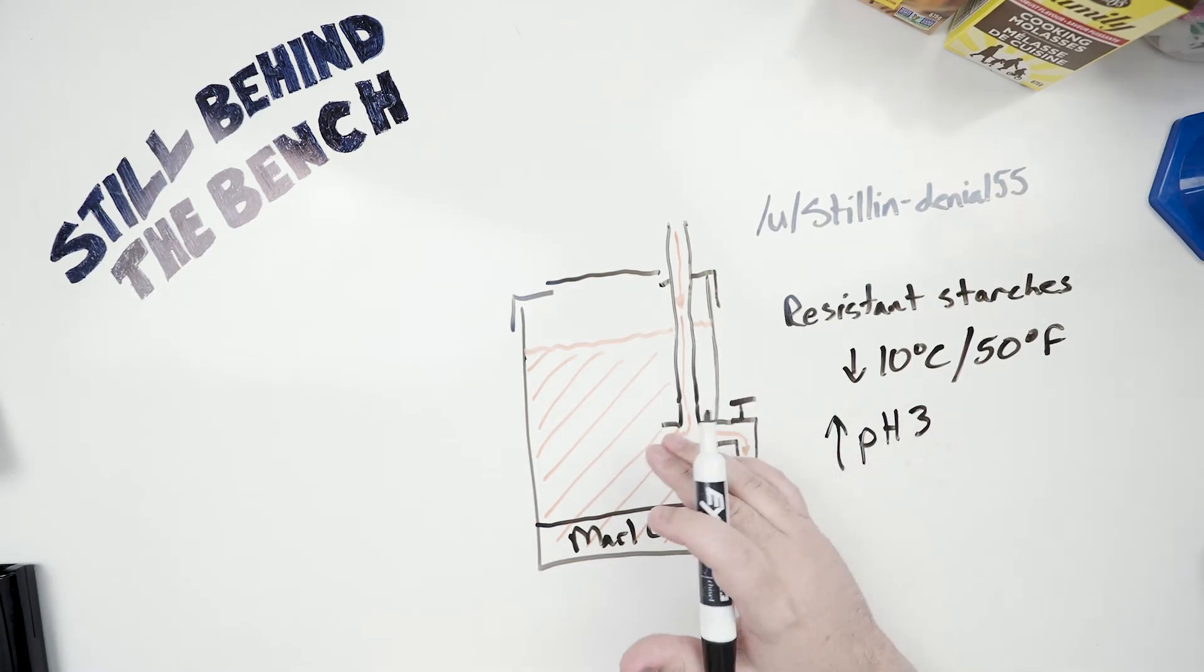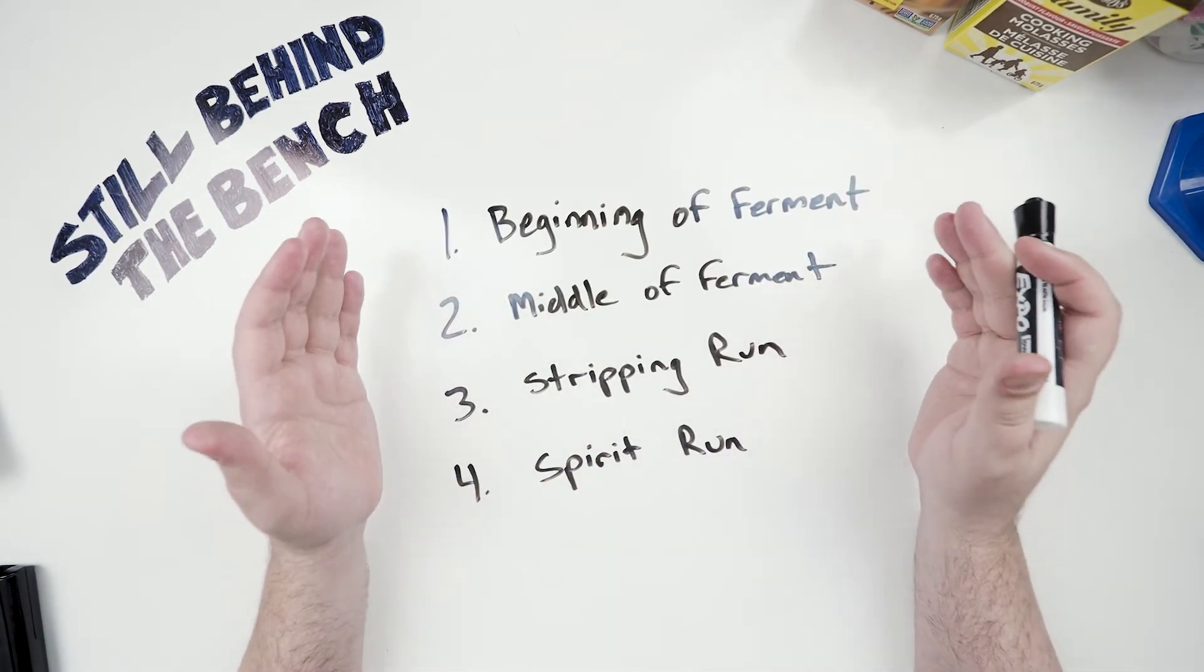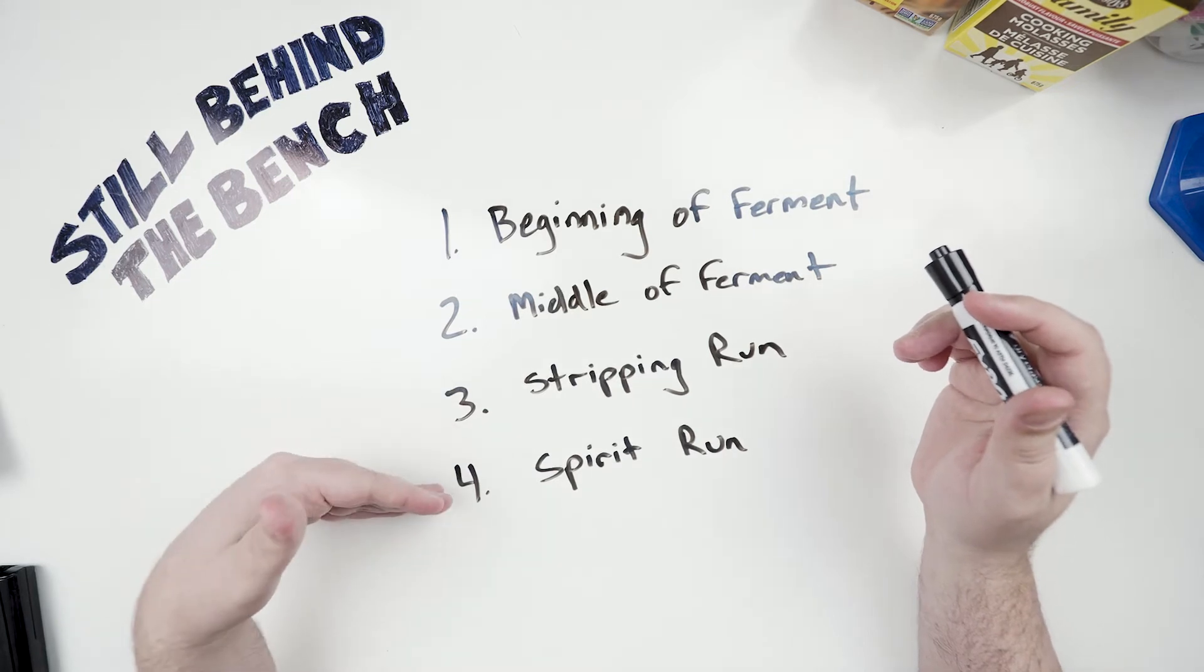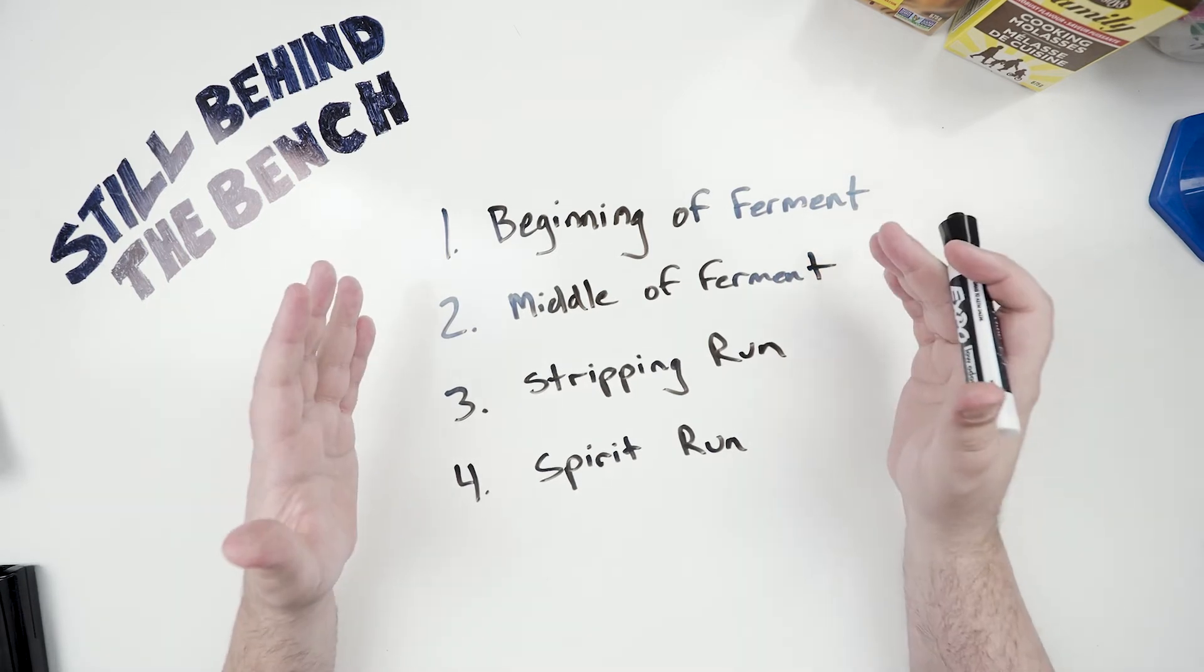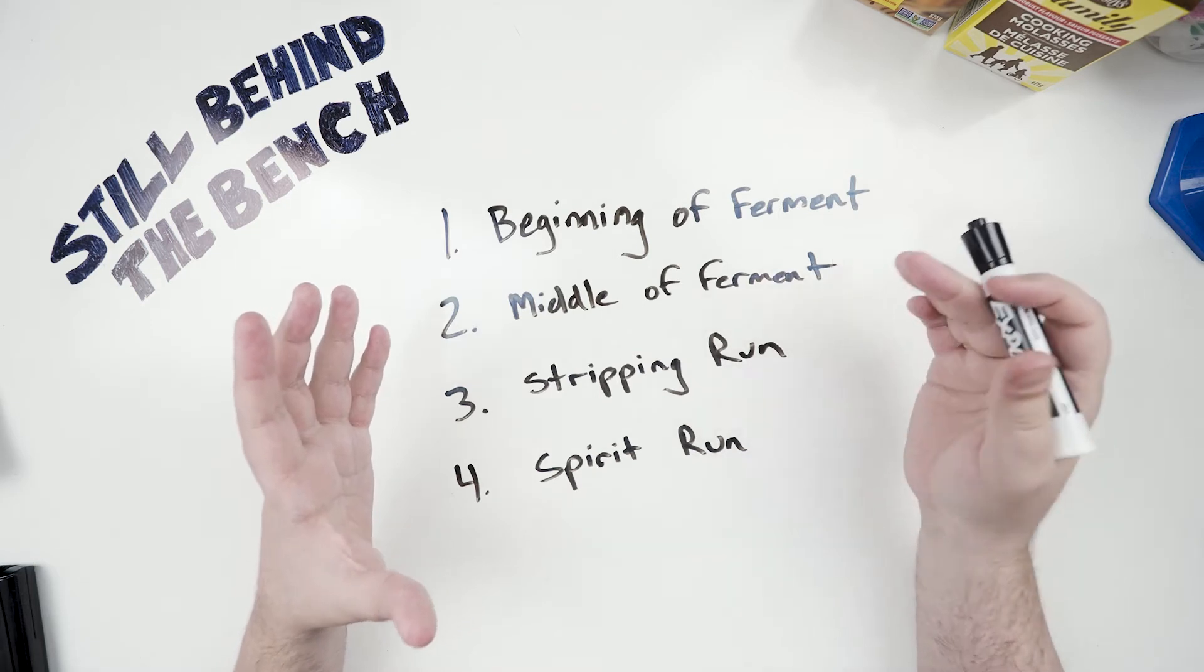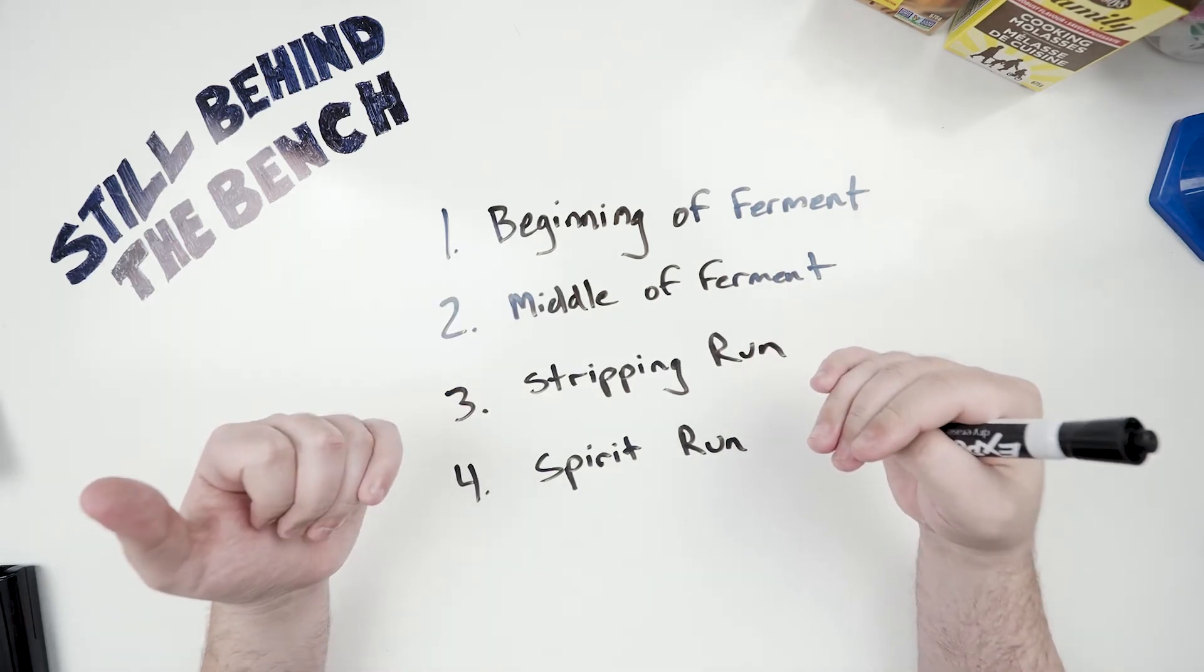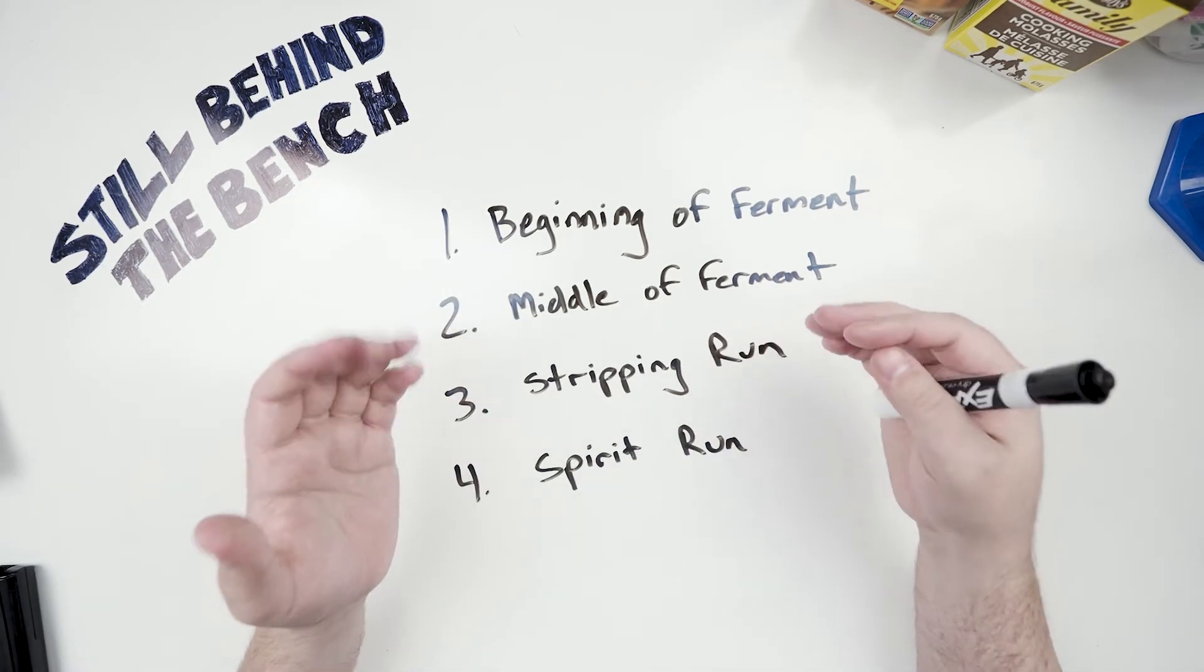And that's it for making a muck pit. Let's get on to how you actually use dunder and muck. For the use of dunder and muck there's generally four ways to use them. For dunder you can just straight up add it at the beginning of the ferment, middle ferment, you can throw it in while you're doing your stripping run or you can throw it in for your spirit run and you can use it directly. If you're going to be storing dunder do it in something like a sterile bucket if you don't want it to turn into muck.